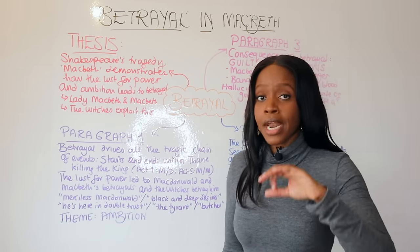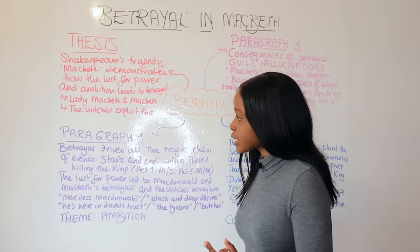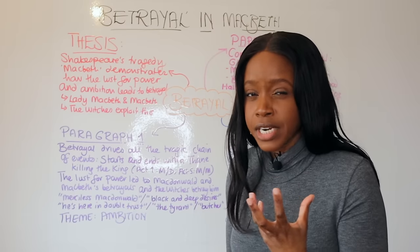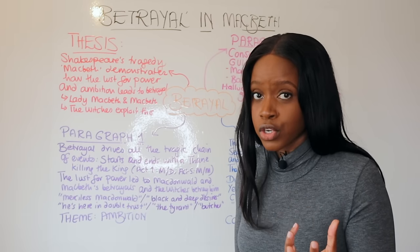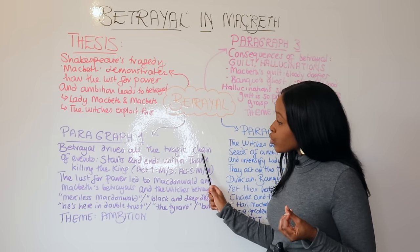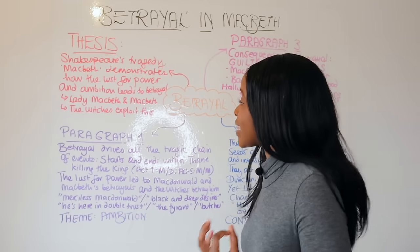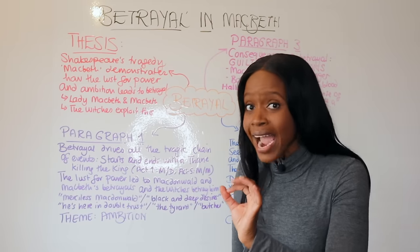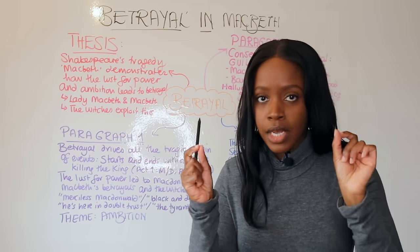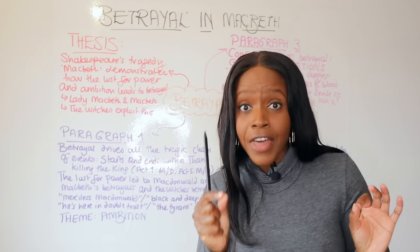Your first perfect paragraph on this theme must focus on Macbeth. A really important observation for your first paragraph, after your thesis statement, is that betrayal drives all the tragic chain of events. Make the observation that this play — from act one to act five — starts and ends with a thane killing the king. In act one, the Thane of Cawdor, Macbeth, kills King Duncan.